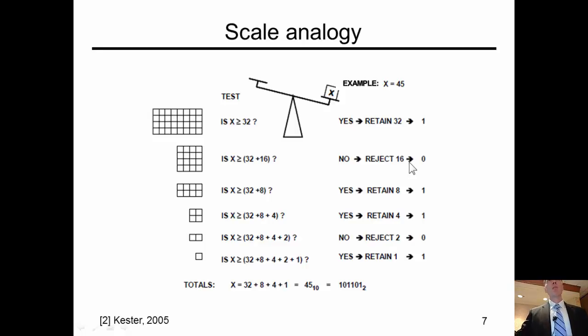This would be rejected because the unknown, 45, is less than 48. And you'd move all the way down until you would find that he would have, on the left side of the scale, 32, 8 plus 4 plus 1, which is 45. And it would equal the unknown. That is the SAR algorithm, and that existed in medieval times, maybe it's not medieval times, Renaissance or something like that.